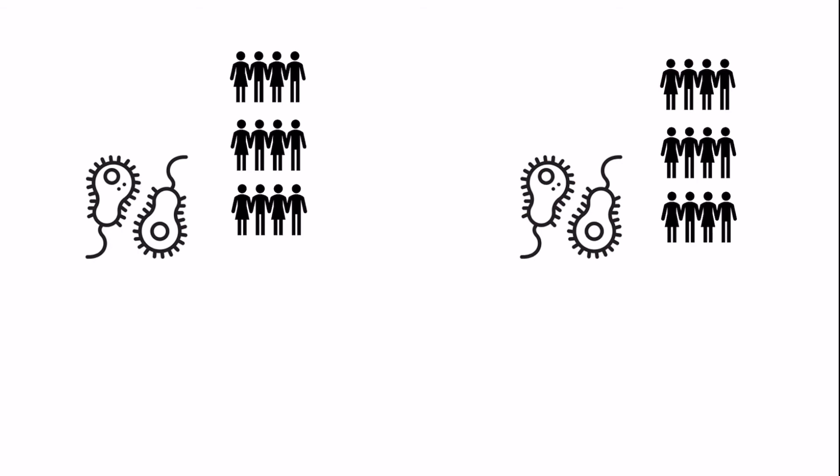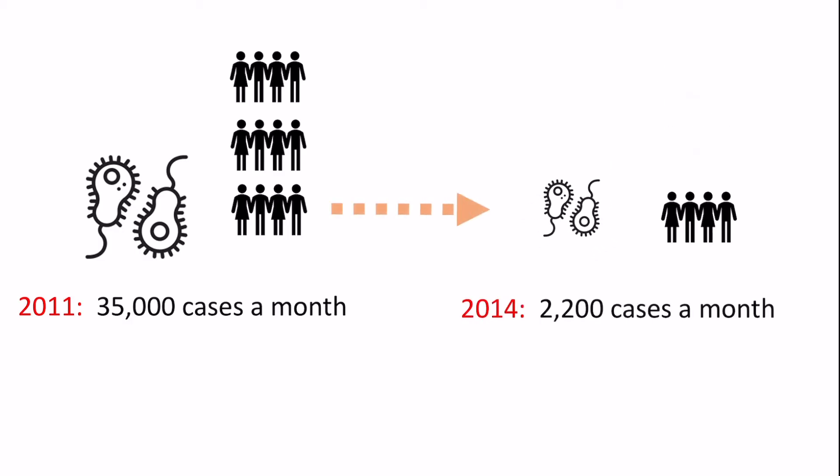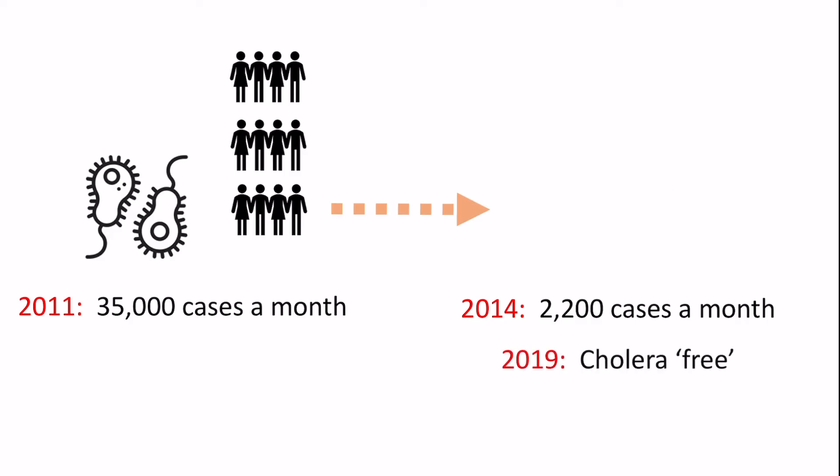In terms of success, by 2011 — just under a year after the outbreak — there were up to 35,000 cases a month. By 2014, thanks to the work of NGOs like the British Red Cross and the UN, this had fallen to 2,200 cases a month. By 2019, Haiti was declared cholera-free, and it had remained cholera-free for two years as recently as 2021.